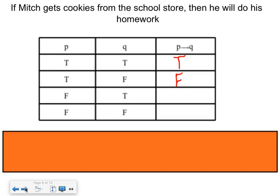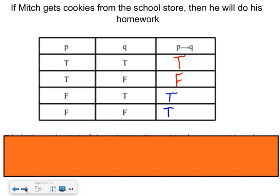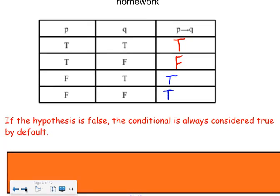But now I'm Mitch, and I don't go buy school cookies. So it's false. But then I do my homework. That's good. But it's still false, because we don't really know what the implication is to not doing my homework. So actually, they're both true, because we didn't know what I was going to do. So by default, they're true.